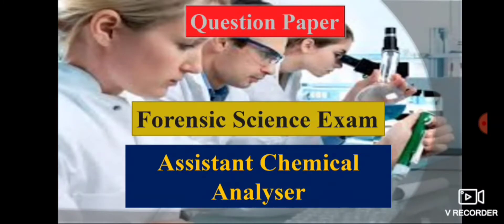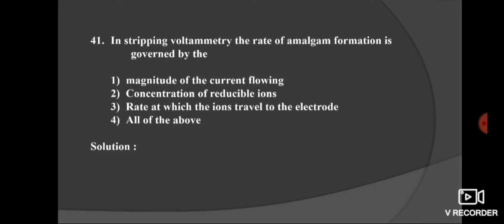So let us start from question number 41. In stripping voltammetry, the rate of amalgam formation is governed by: option 1, magnitude of current flowing; second, concentration of reducible ions; third, rate at which ions travel to the electrode; and 4, all of the above. Here, the rate of amalgam formation is governed by all of the above factors. Option 4 is the right option.